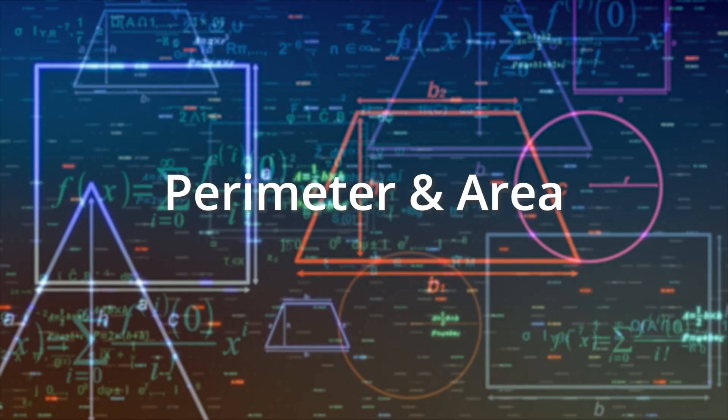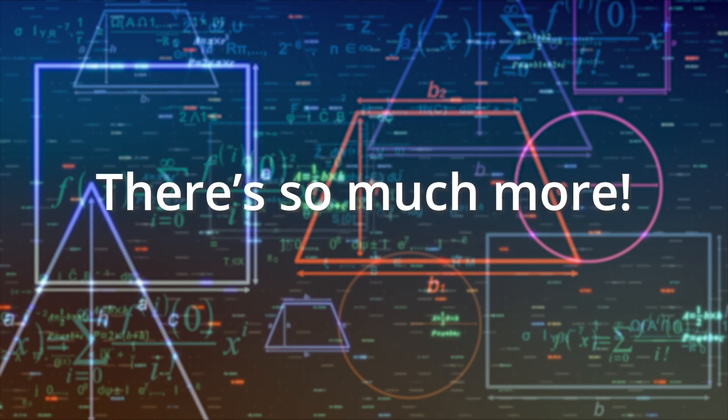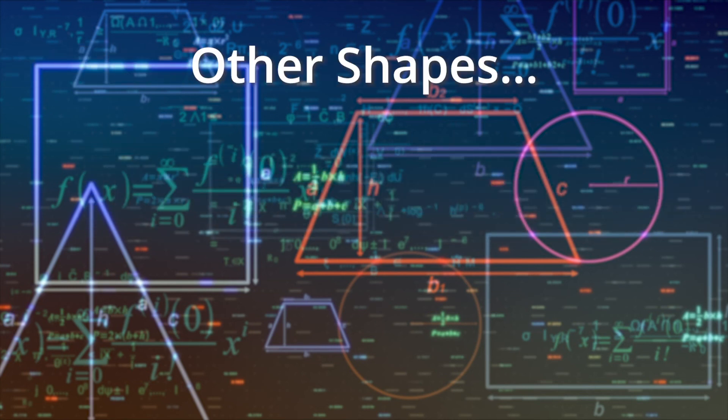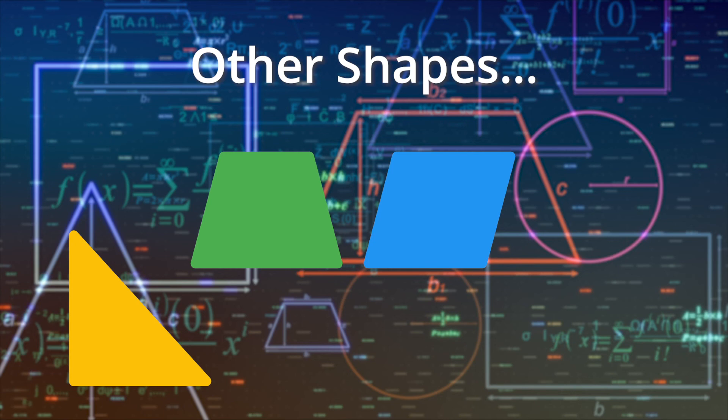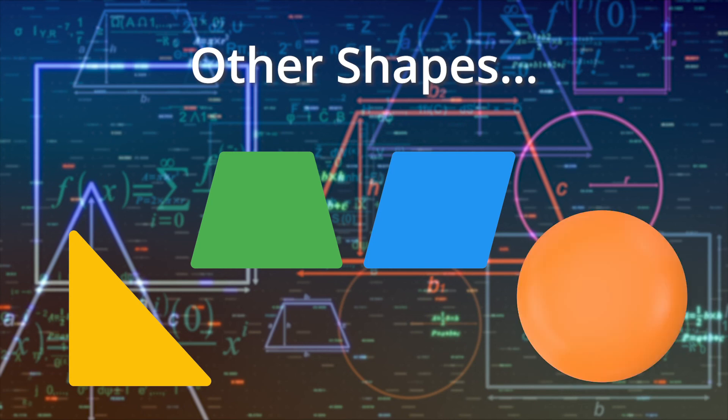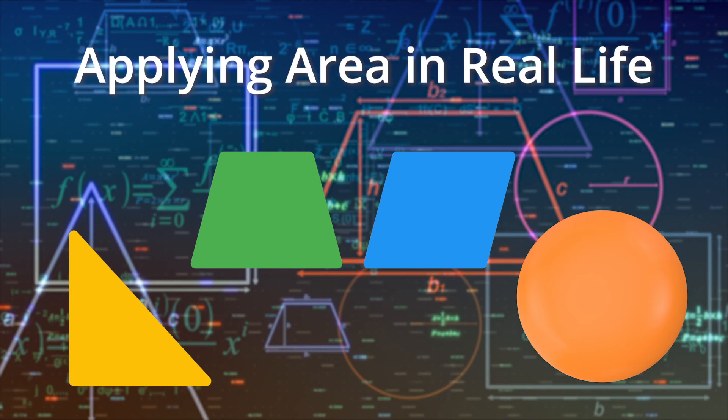So now you know the general idea of perimeter and area. Of course, there's a lot more to learn. For more about area and how it applies to shapes like triangles, trapezoids, rhombuses, and others, watch our other video about area called Applying Area in Real Life.